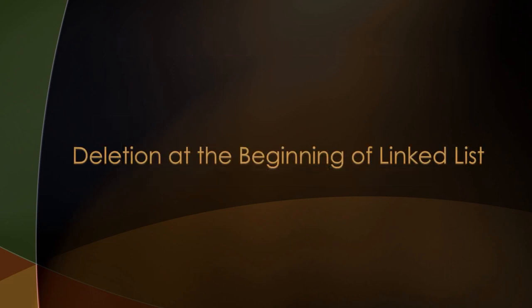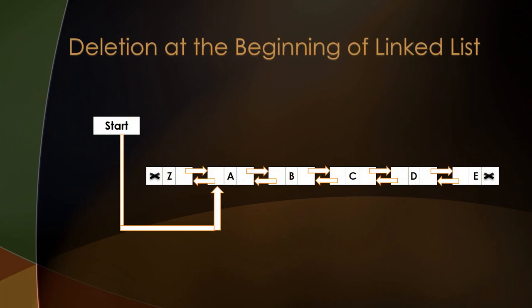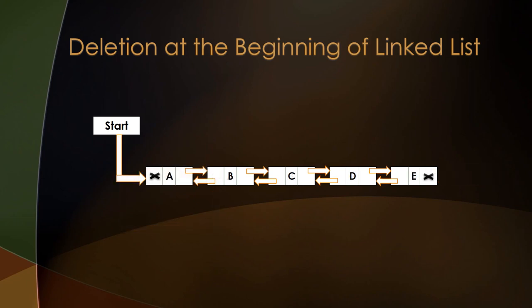The next part is deleting a node at the beginning of a linked list. The first step is to make the start pointer point directly to node A instead of node Z, since node A will now be the beginning of the linked list. This is done by copying the address in the forward pointer of node Z into the start pointer. Also make sure the previous pointer of node A is set to null, since the first node in the linked list always has its backward pointer set to null.